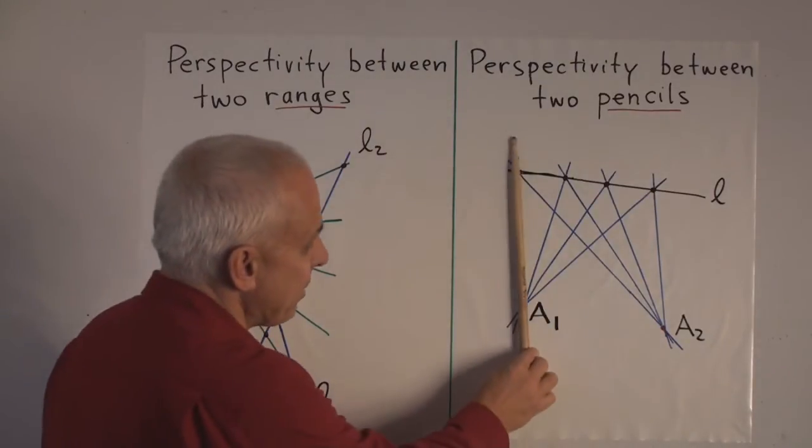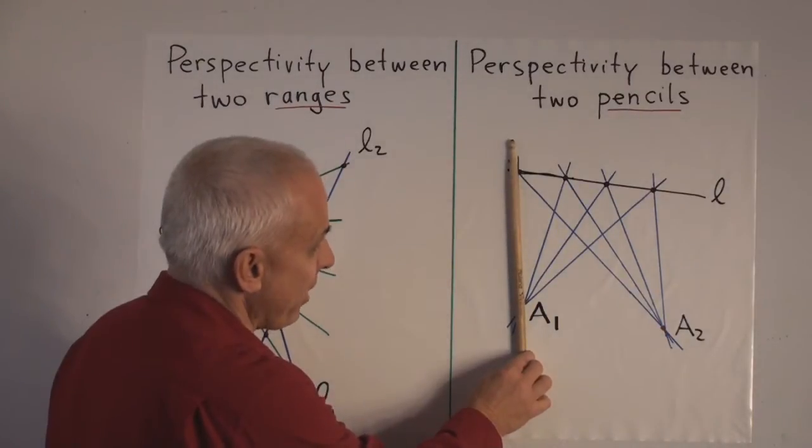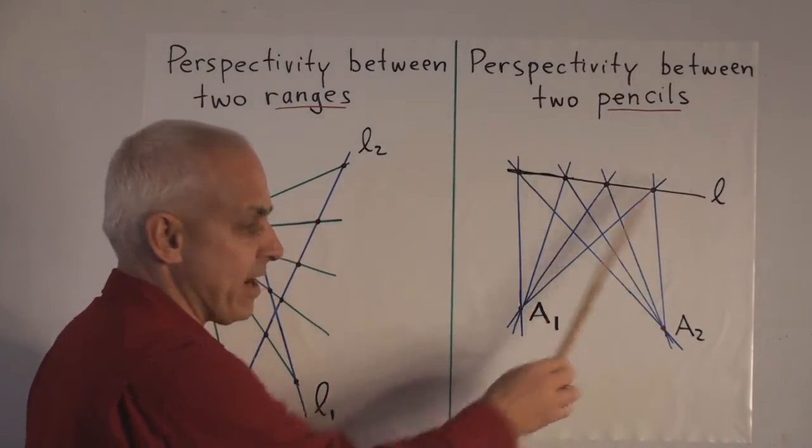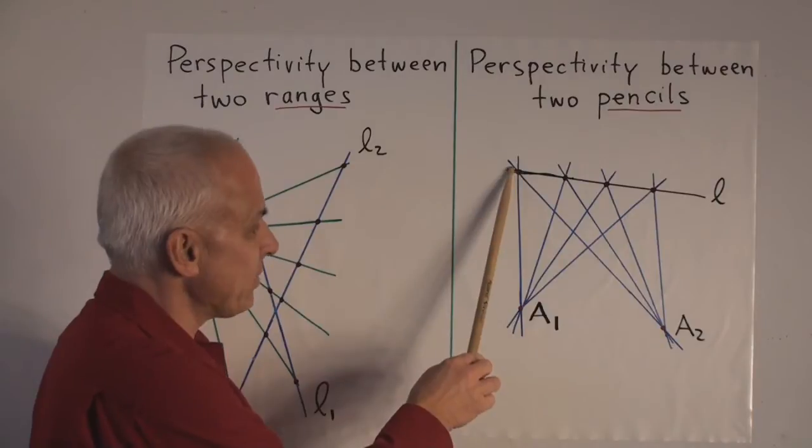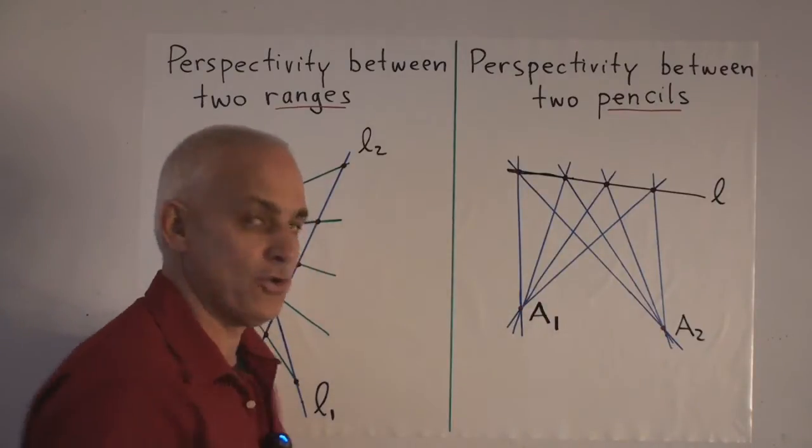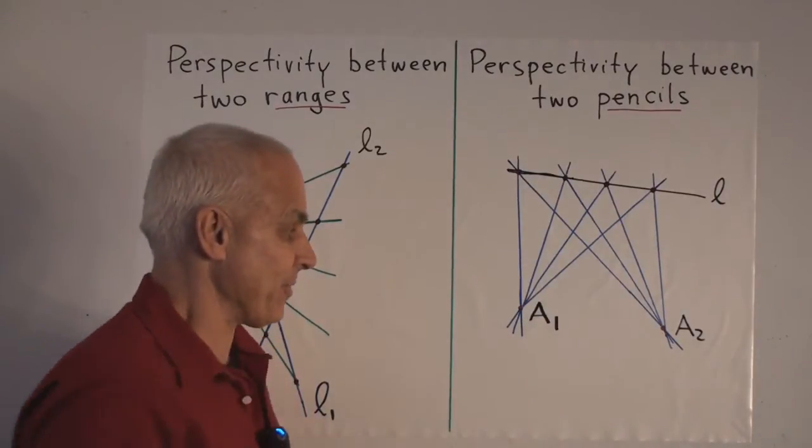How do we use that line? Well, then for any line in the pencil at A1, we look to see where it intersects L, and where it meets, we join to A2 to get an element of the pencil from A2.